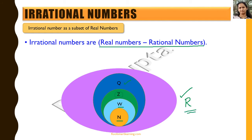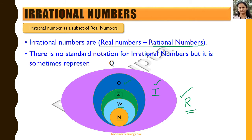Now if you look at real numbers, it is again a superset of the rational numbers. So all the numbers in this superset of reals which are not rational are the irrational numbers — the numbers which will lie in the purple domain. There is no standard notation for irrational numbers, but it is sometimes represented as Q-bar, Q being the rational numbers. It is also represented by R backslash Q, where this backslash means minus, so R minus Q gives us the irrational numbers.